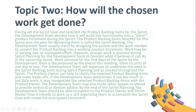Topic two: how will the chosen work get done? Having set the sprint goal and selected the product backlog items for the sprint, the development team decides how it will build this functionality into a done product increment during the sprint. The product backlog items selected for this sprint plus the plan for delivering them is called the sprint backlog. The development team usually starts by designing the system and the work needed to convert the product backlog into a working product increment. Work may be of varying size or estimated effort; however, work is planned during sprint planning for the development team to forecast what it believes it can do in the upcoming sprint.